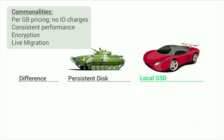Before we get too deep into the numbers, let's give a quick overview of the similarities and differences between the two PD options and local SSD. First, the similarities. All of our block storage options are priced on a per gigabyte basis with no IO charges ever. This makes planning simpler and eliminates surprises. All of our block storage options are designed to perform consistently — between similar volumes and consistently over time. Third, all of our block storage options are encrypted on disk. And because PD is a network storage offering, the data is also encrypted over the wire. This is to give you the best possible security. Lastly, all of our block storage options support live migration and are therefore not affected by planned down times that keep Google Cloud data centers patched and maintained, which is what keeps your applications as secure and available as possible.